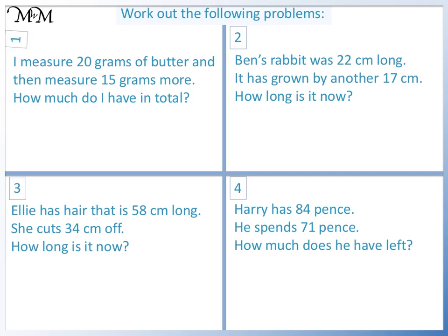Question 1. We start with 20 and add 15. We add these numbers to find the total. 0 plus 5 equals 5 and 2 plus 1 equals 3. The total is 35 grams.